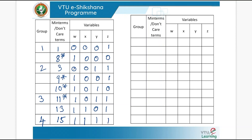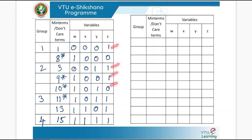As per our regular procedure, we now compare and combine main terms and don't care terms where only one bit position change occurs. We compare group 1 with group 2: term 1 must be compared with 3, 9, and 10; term 8 must be compared with 3, 9, and 10. Wherever there is only one position change, those can be combined. Don't care terms are to be indicated by the star symbol.